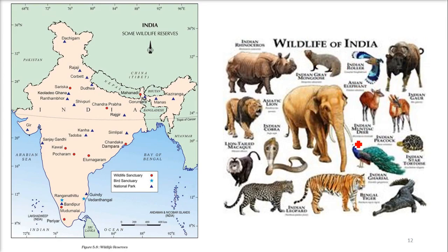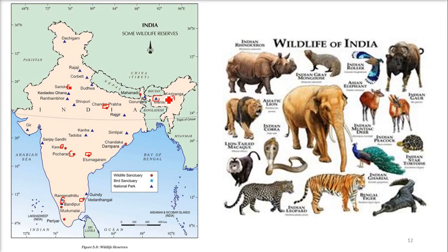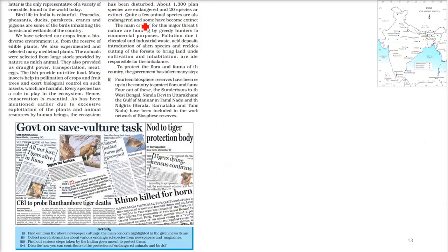Wildlife sanctuaries (marked in red on the map), bird sanctuaries (marked with stars), and national parks (marked with blue triangles) show the government's efforts to save the ecosystem and protect flora and fauna.